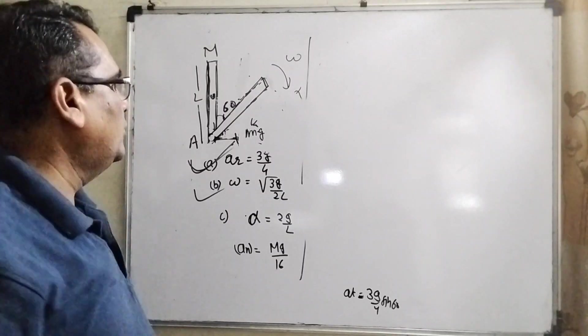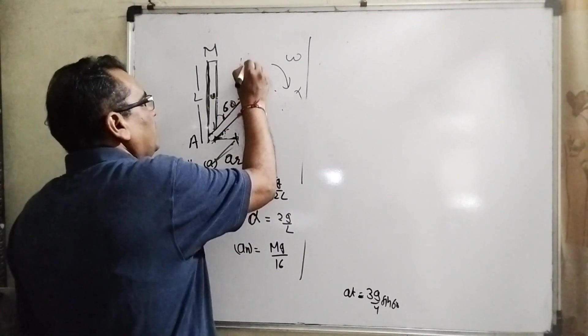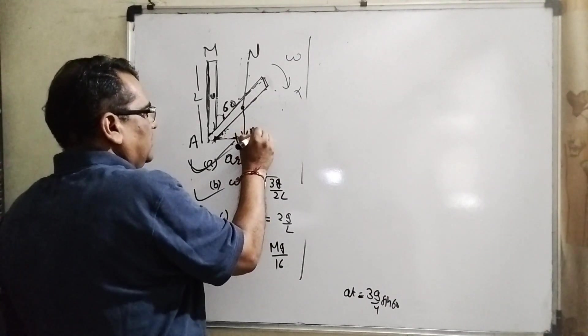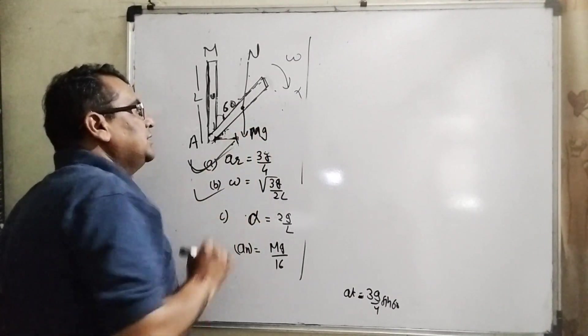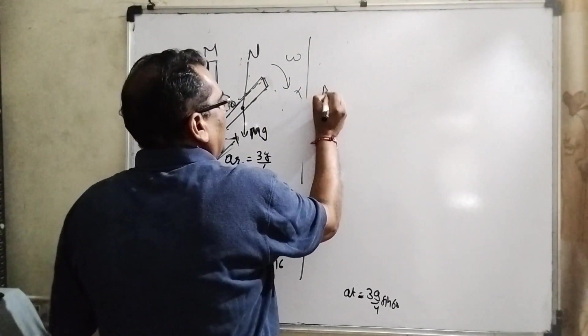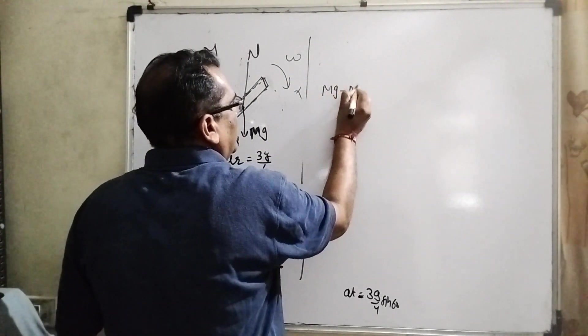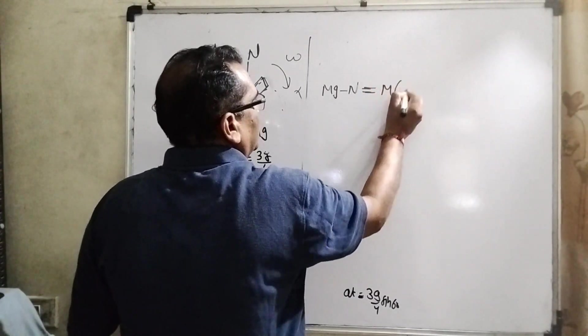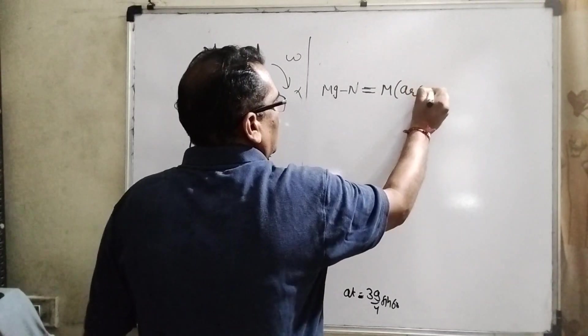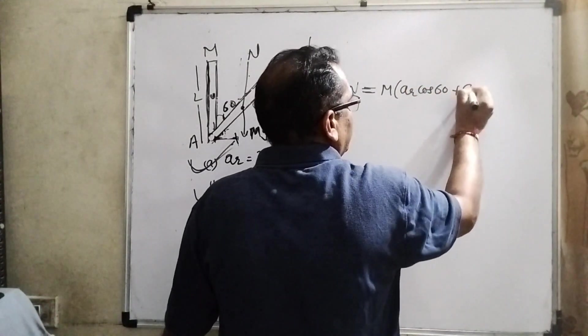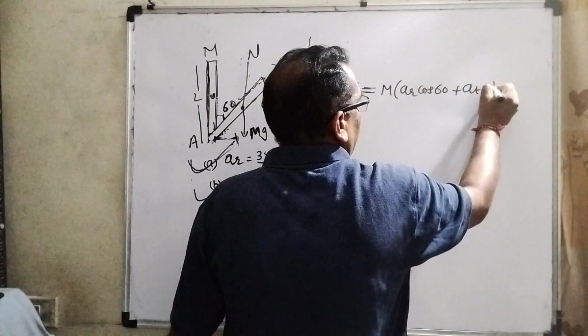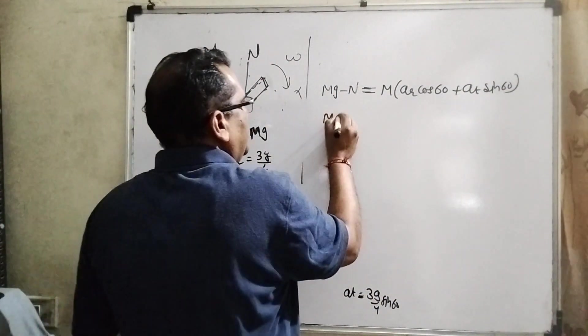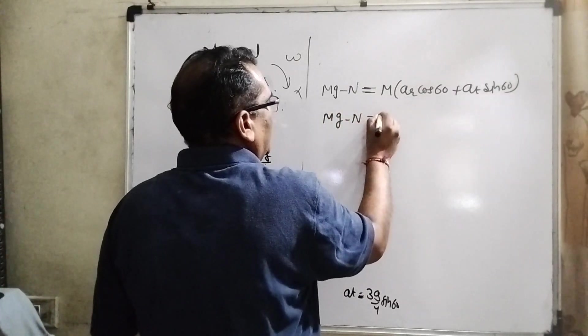So here we have to find out the resultant normal force. You can see that here normal force is acting in the upper direction. So this is acting in the upper direction and this M g acts downward direction.